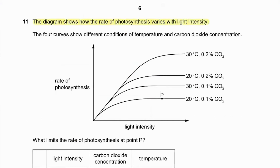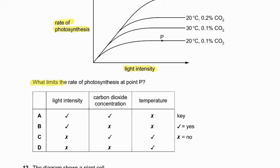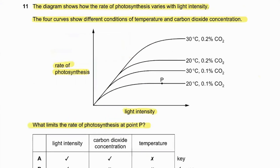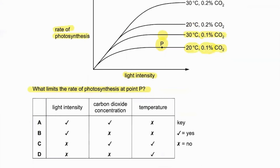Question number eleven: the diagram shows how the rate of photosynthesis varies with light intensity, with four curves showing different conditions of temperature and CO₂ concentration. At point P — 20°C and 0.1% CO₂ — if we use higher temperature with same CO₂, the rate increases, so temperature is a limiting factor. At same 20°C with higher CO₂ concentration, the rate also increases, so CO₂ concentration is also limiting. Answer 11C is correct.